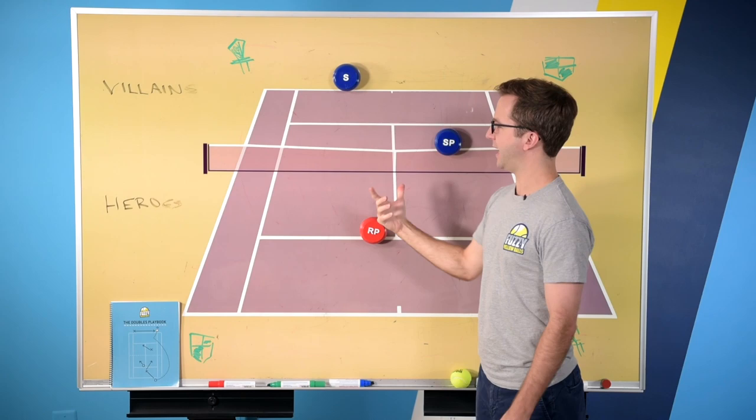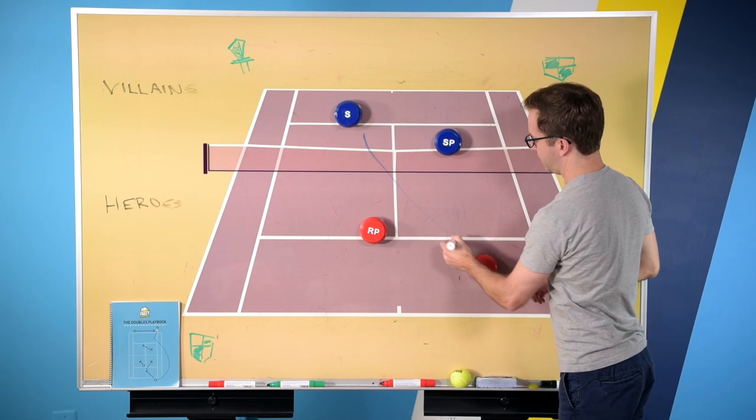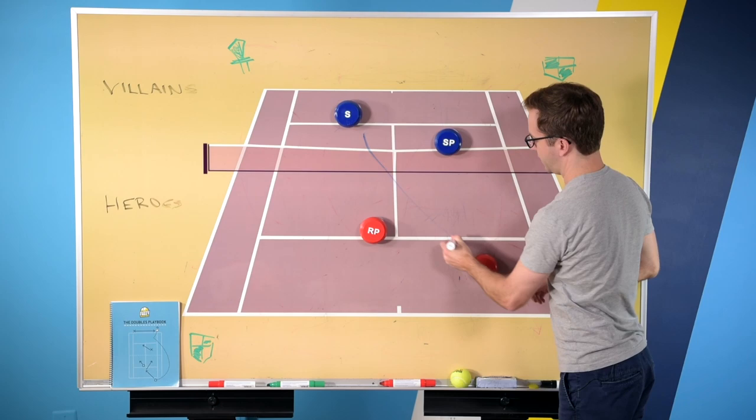If the server is serving and volleying, what can happen is they come in, you hit a return, you follow your return to the net, and very often they can hit a volley that's going to be kind of at your feet.